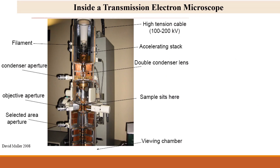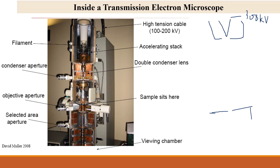Inside the transmission electron microscope, whether it is a field emission gun or thermionic emission gun, there is a sharp filament below which is a Wehnelt cap. This filament is connected to minus 300 kV in a 300 kV system, or minus 200 kV in a 200 kV system. The final stage in the acceleration stack is grounded to 0 kV.